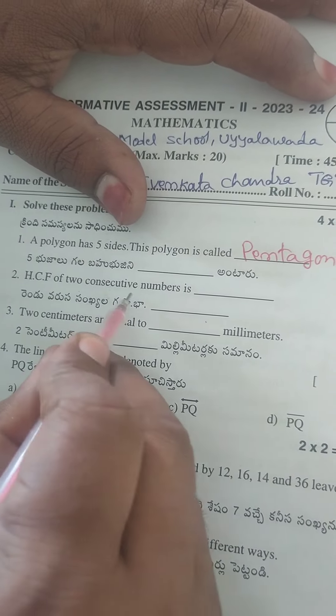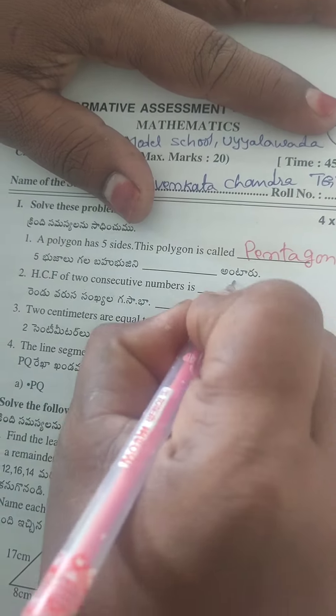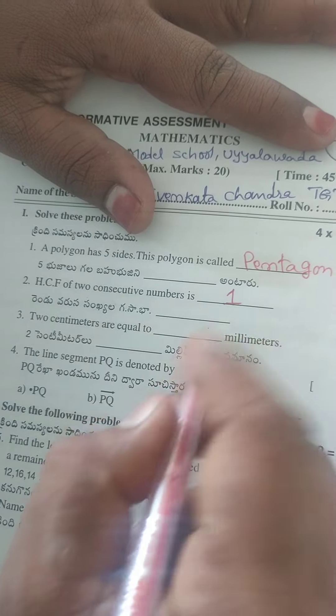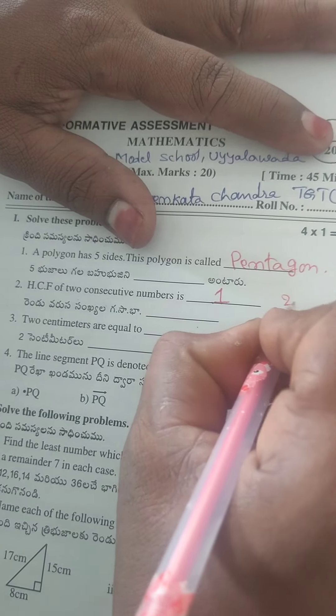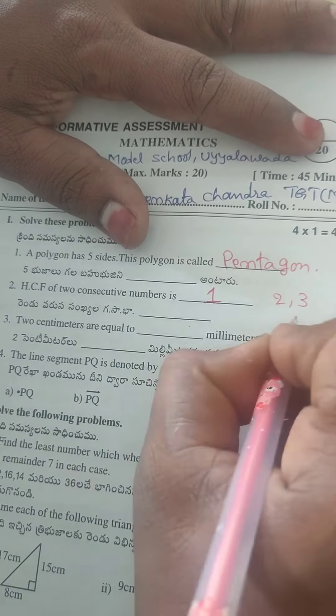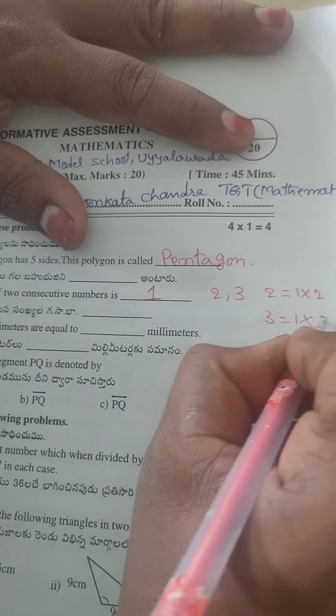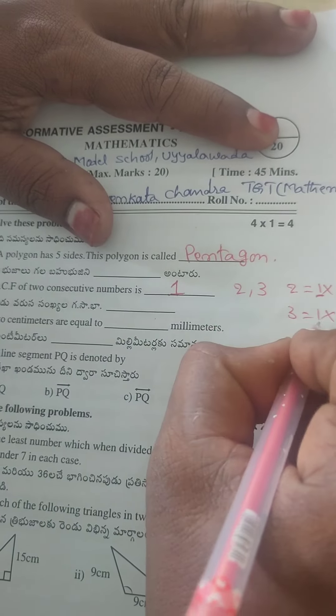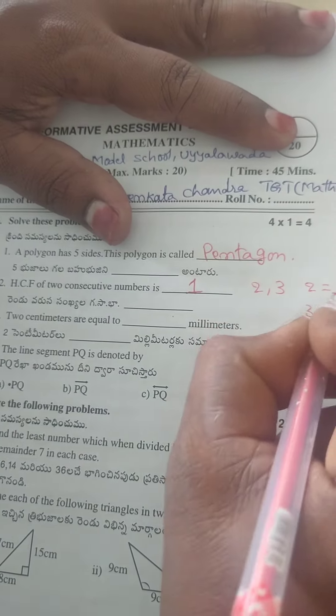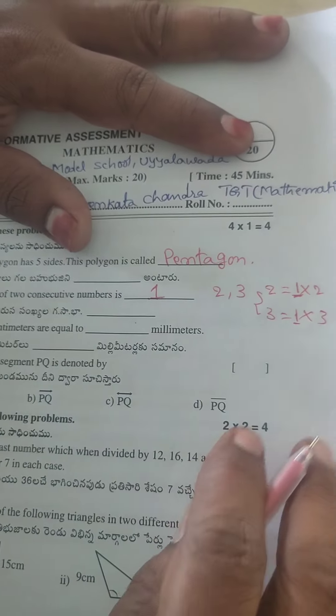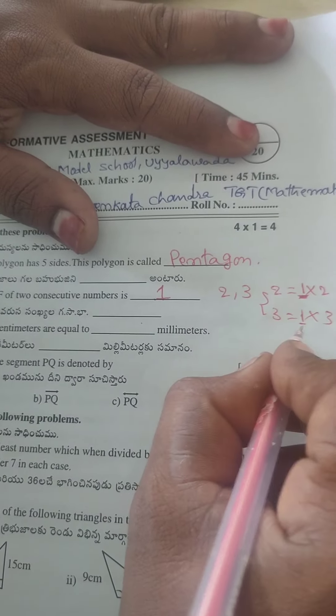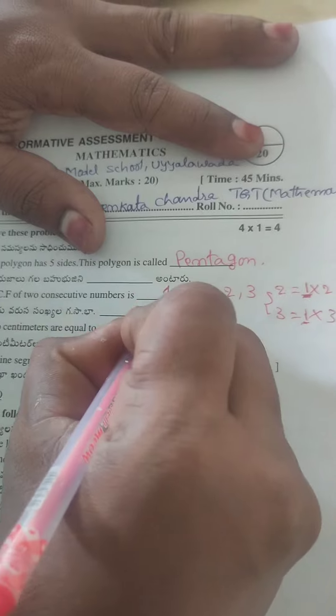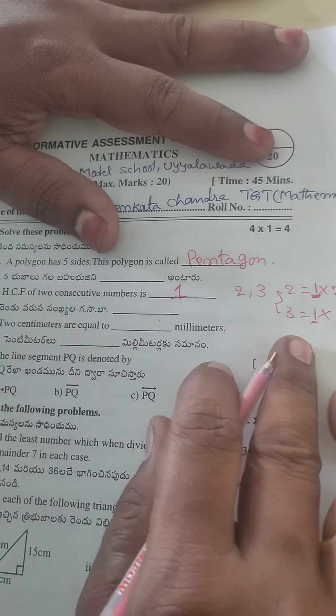HCF of two consecutive numbers is always one. Let's take an example: two and three. First write factors of two: one into two. Factors of three: one into three. The common factor is one. One is the common factor of two consecutive numbers, two and three. So one is the HCF of any two consecutive numbers.